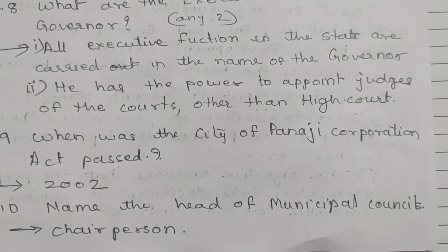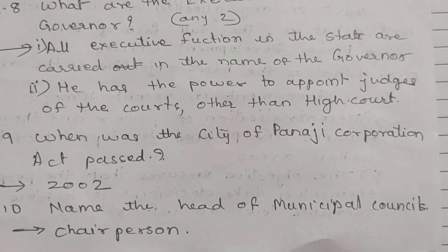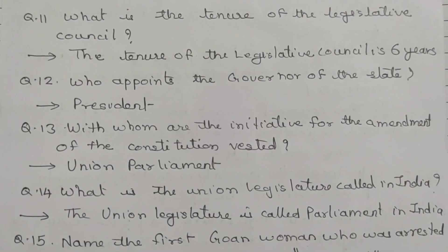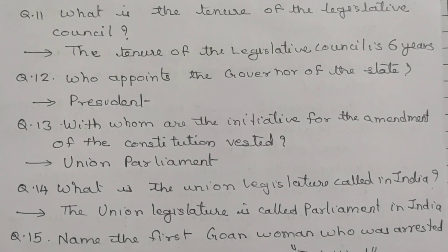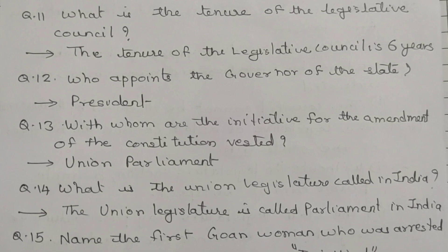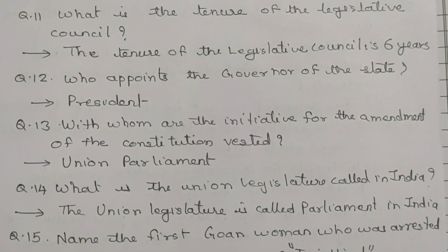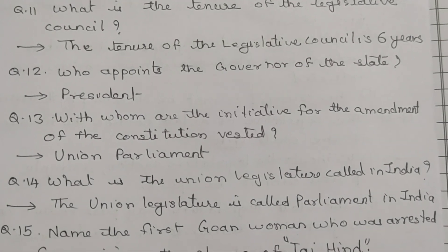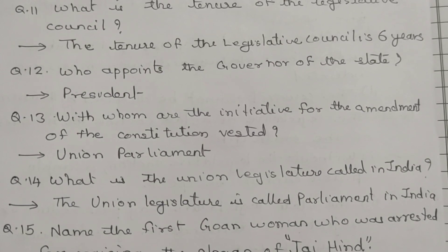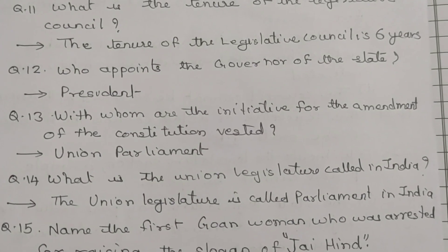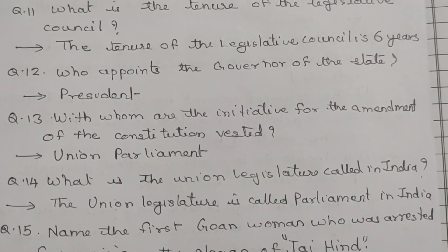Question number 10: Name the head of the Municipal Council. The head of the Municipal Council is the Chairperson. Question number 11: What is the tenure of the Legislative Council? The tenure of the Legislative Council is six years. Question number 12: Who appoints the Governor of the state? The President appoints the Governor of the state. Question number 13: With whom does the initiative for the amendment of the Constitution rest? With the state or Union Parliament. Question number 14: What is the Union Legislature called in India? The Union Legislature is called Parliament in India.